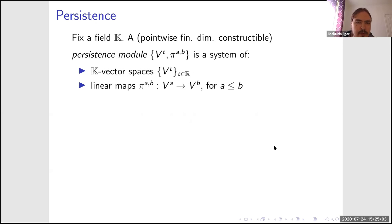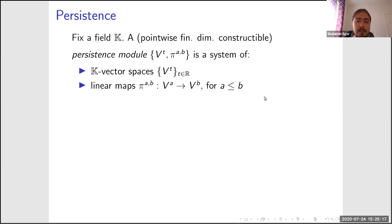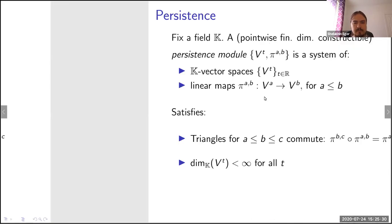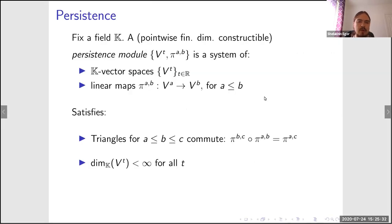Namely, a persistence module. A persistence module is a system of vector spaces over a field k with linear maps from V_a to V_b when a is less than b, satisfying certain conditions: for example, going from a to b and then b to c is the same as going from a to c.